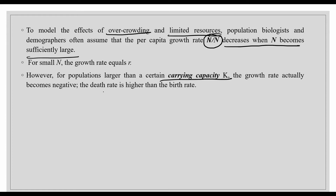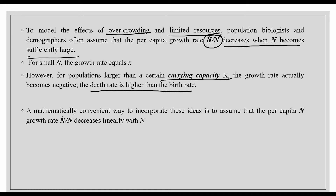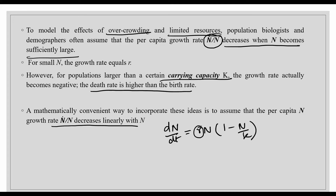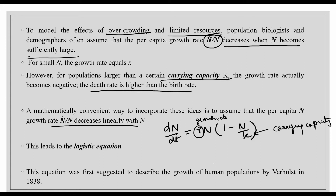When the population exceeds carrying capacity, the death rate becomes higher than the birth rate because populations compete with each other. The mathematical equation incorporating all these ideas is the logistic equation: dN/dt = r·N·(1 - N/K), where r is the growth rate and K is the carrying capacity. This equation was first used by Verhulst in 1838.